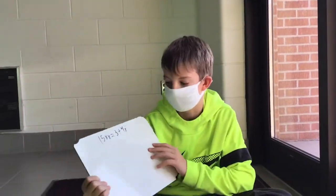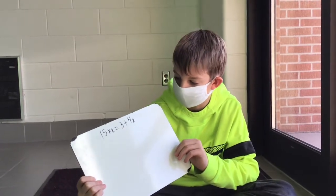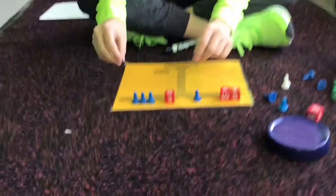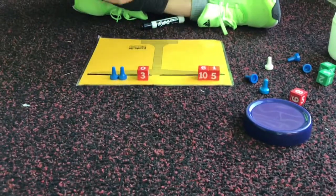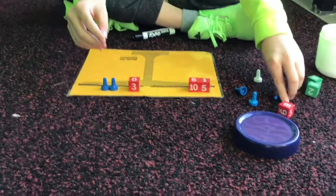My next problem is going to be 15 plus x equals 3 plus 4x. First thing I'm going to do, I'm going to take these two positive ponds, take those away, since they cancel each other out.